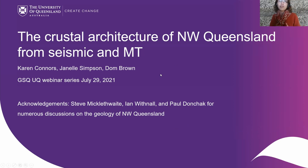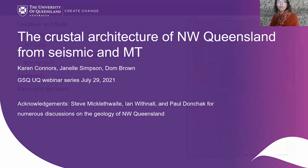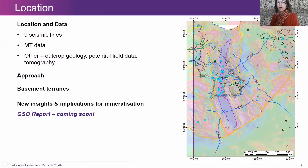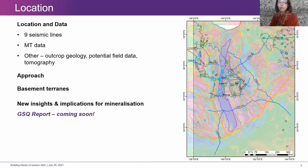I'll focus on the interpretation of the seismic. We'll come back to Dom later to give you an overview on some of the geochronology work and implications from that, and Janelle will look at the MT data. We're looking at Mount Isa. You can see the outline of the outcrop there in gray and the Georgetown area to the east. We focused on these nine seismic lines highlighted in blue, integrated with the MT especially, but also outcrop geology, potential field, and a bit of the tomography data.